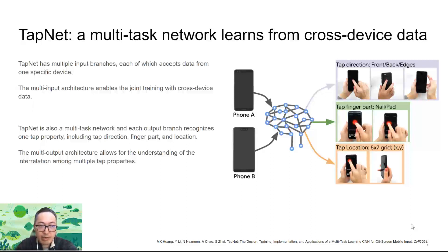TapNet is also a multi-task network and each output branch recognizes one tap property, including tap direction, finger parts, and location. This multi-output architecture allows for the understanding of the interrelationship among multiple tap properties.